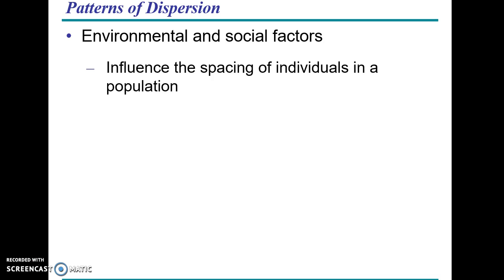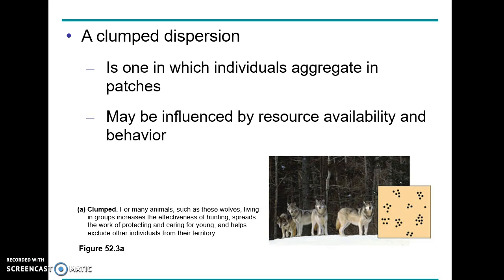Patterns of dispersion: clumped patterns are where you have a few organisms inhabiting one area. These are usually group animals - if you take wolves, you can have a pack of wolves living in a certain area, and then a huge swath of land in the middle that's completely uninhabited by wolves, and then another pack somewhere else. Clumped dispersion is usually seen with pack animals and very territorial animals.